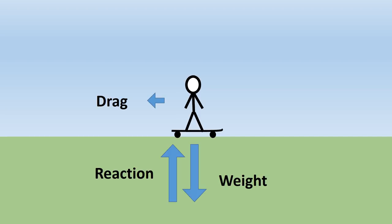Imagine someone on a skateboard. Here, the weight of the skateboarder is counteracted by the reaction from the ground. But the drag, or air resistance, will gradually reduce the speed until the skateboarder stops.